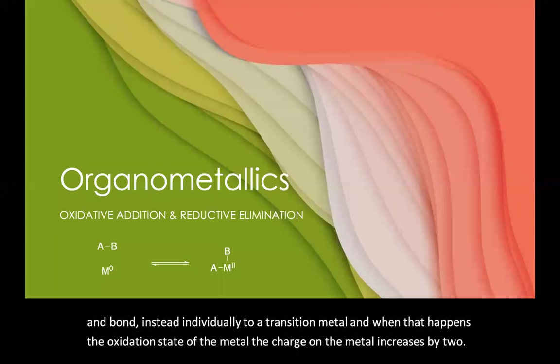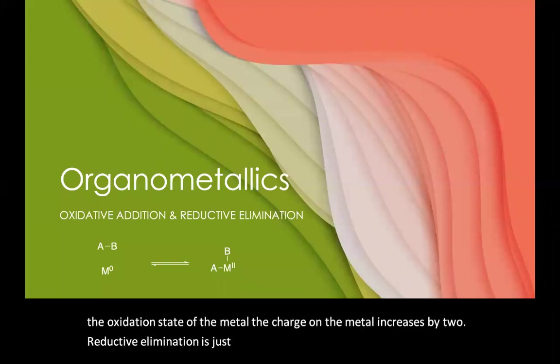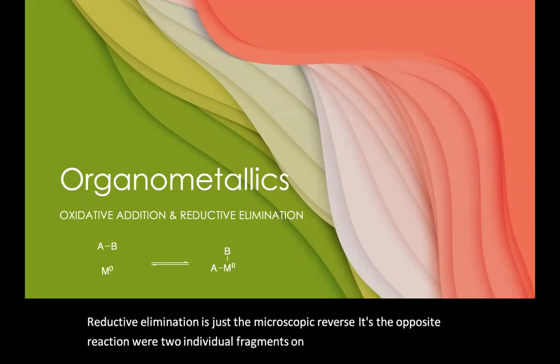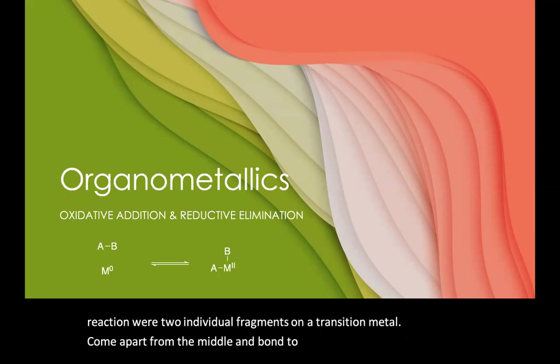Reductive elimination is just the microscopic reverse. It's the opposite reaction where two individual fragments on a transition metal come apart from the metal and bond to each other instead. And the oxidation state of the metal goes down by two.